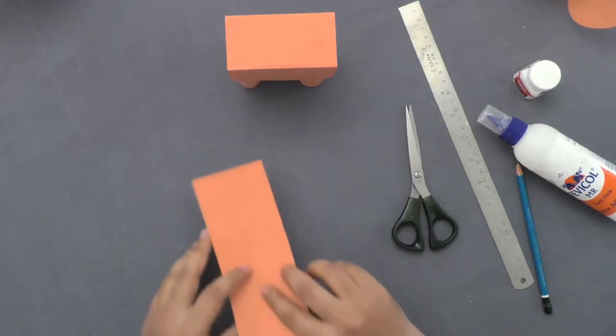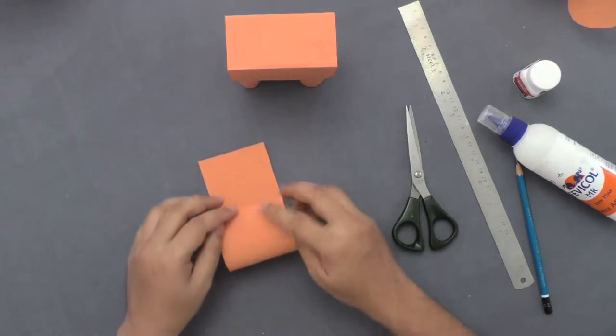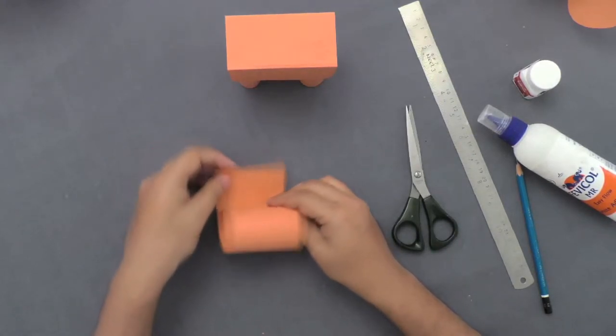Cut out another rectangular strip of chart paper and roll it into a larger cylinder.